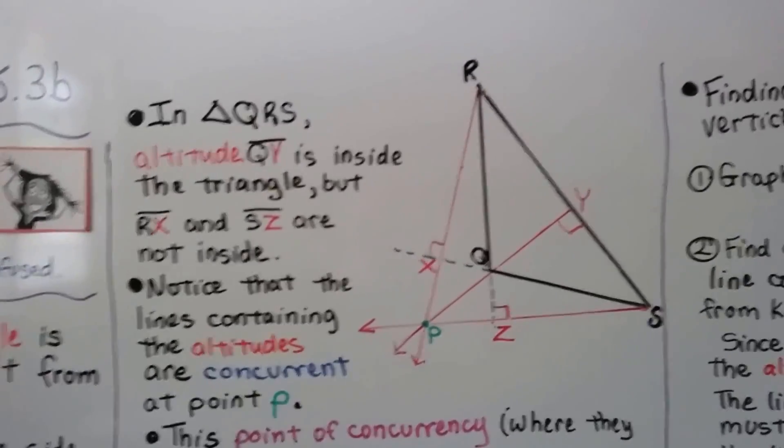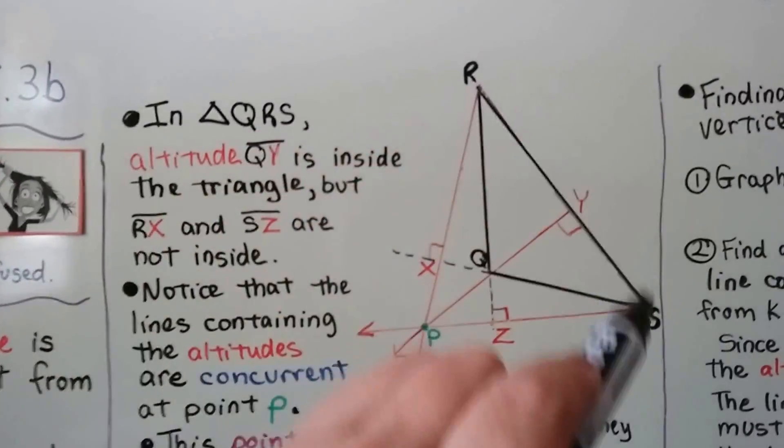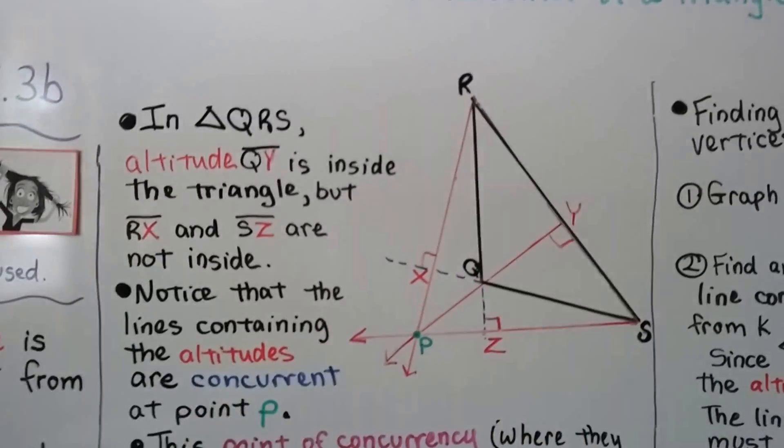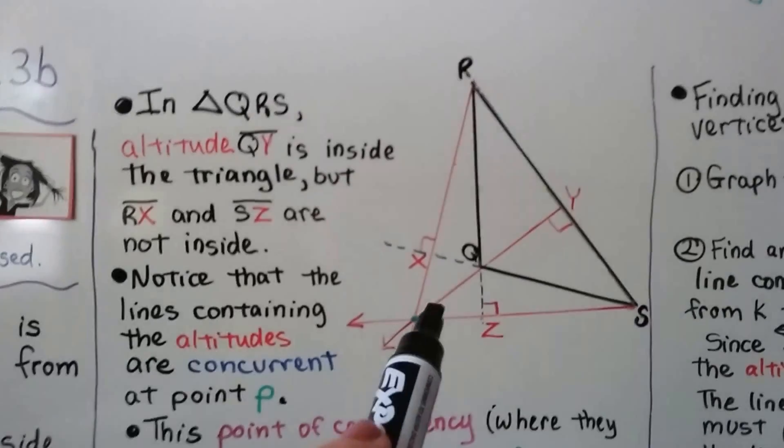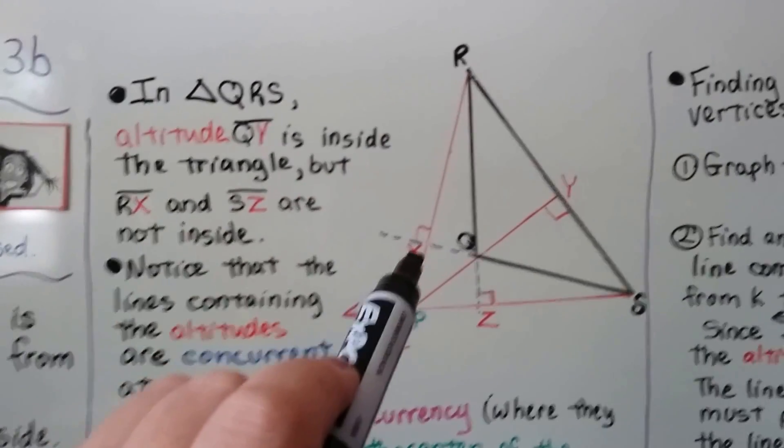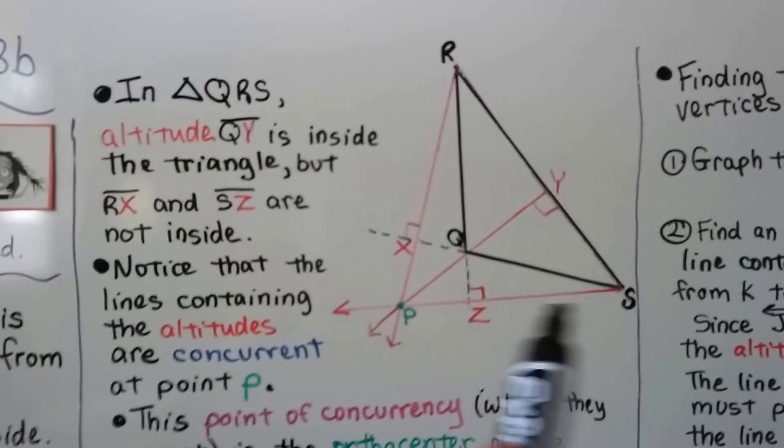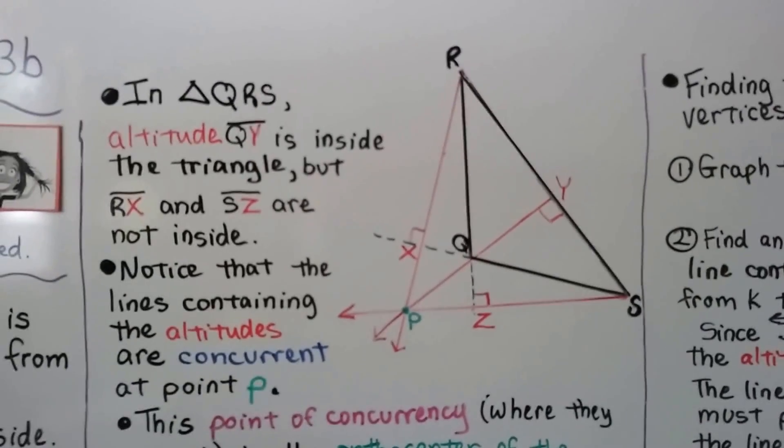In triangle QRS, this black one, QRS, altitude QY, right here, is inside the triangle. But segment RX, RX, right here, and SZ, this one right here, are not inside.